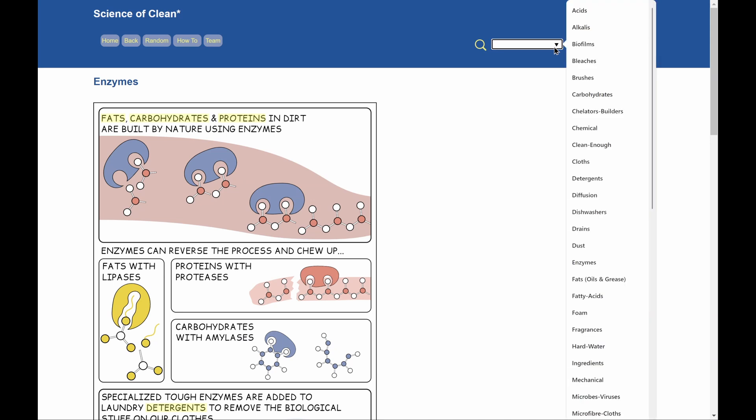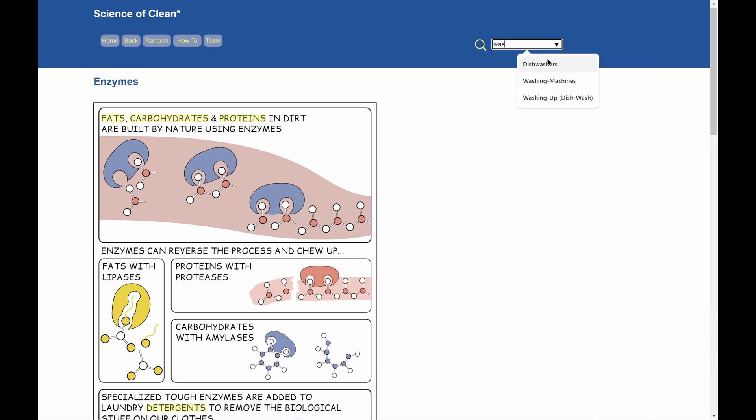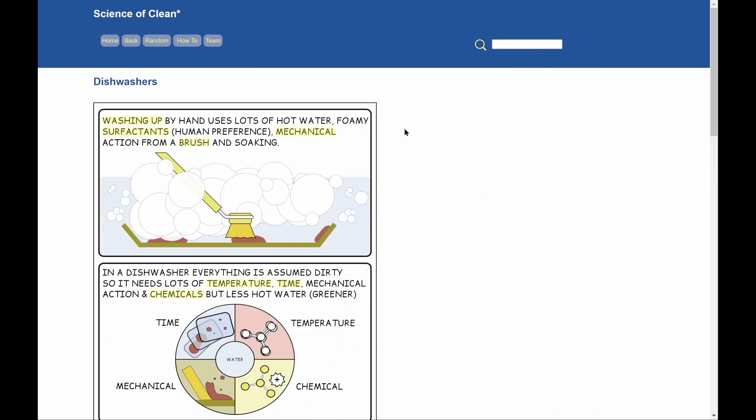Or maybe I'm interested in washing. So I type wash. And I've got dishwashers, washing machines, or washing up. Let's have a look at dishwashers. And here's all about dishwashers. And you've got the center circle inside as well.